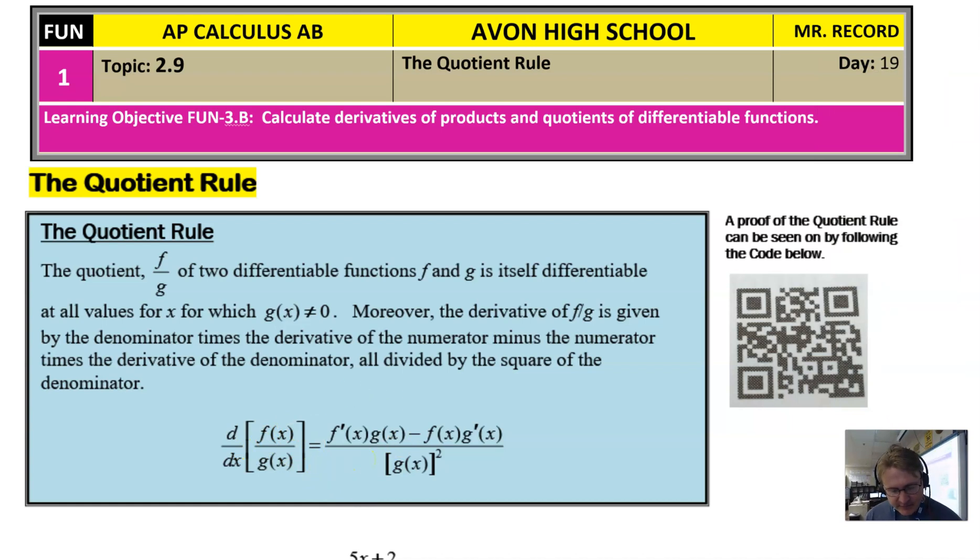But if you take a careful look at this, it should have a little bit of similarities with what you guys had seen from the product rule. Can you all kind of pick out two things that are a little different about this particular formula in comparison to the product rule? It seems to be two things that are different.